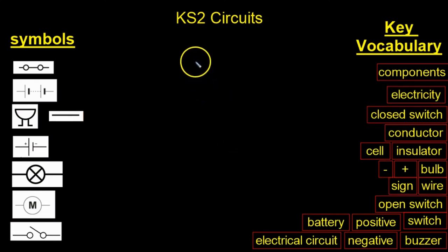All right, in this video we're going to look at circuits for Key Stage 2. On our right we have the key vocabulary. These are the words that you should know by the end of a circuit unit: components, electricity, closed switch, conductor, cell, insulator, negative symbol, positive symbol, bulb, sign, wire, open switch, battery, positive switch, electrical circuit, negative, and buzzer.